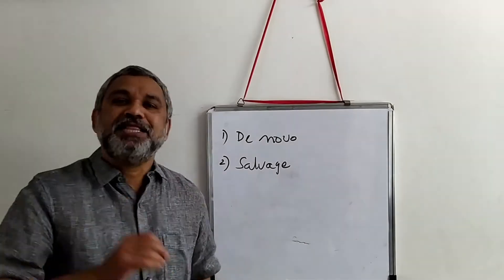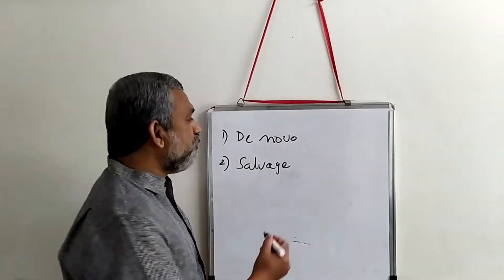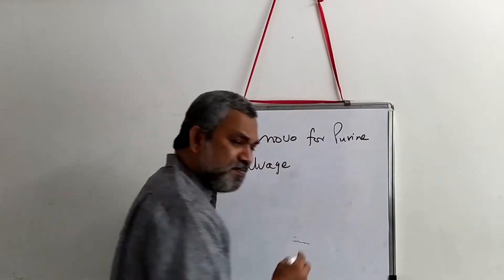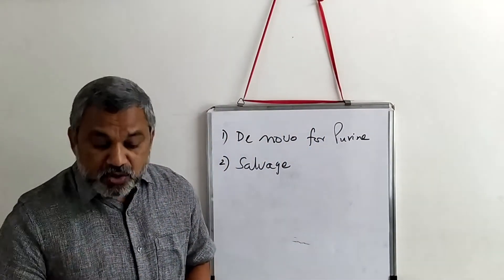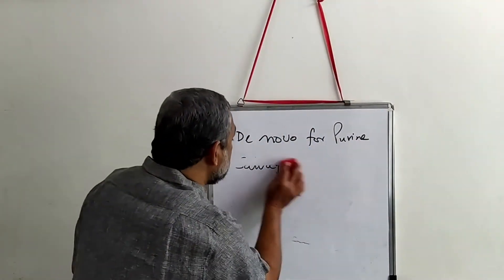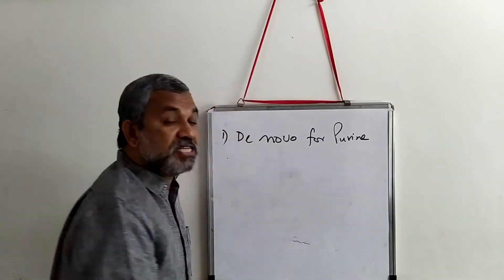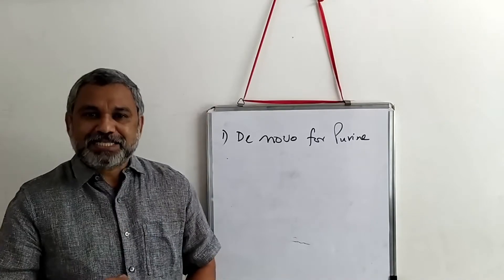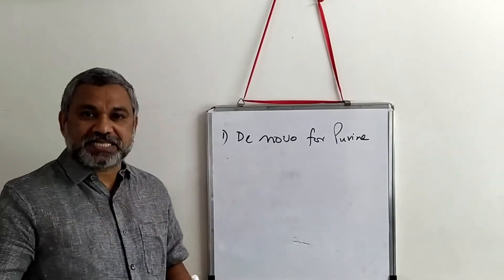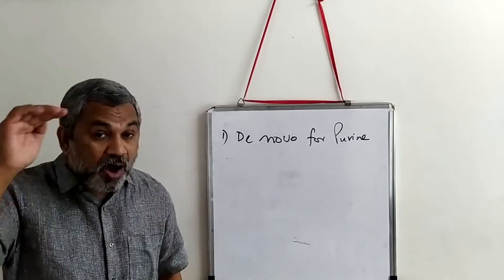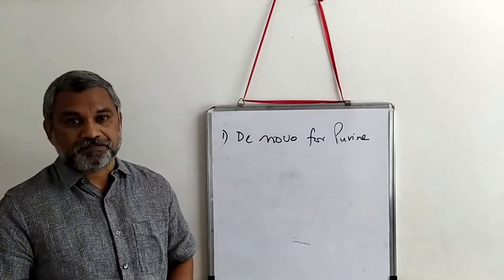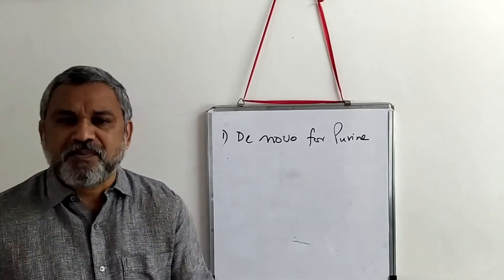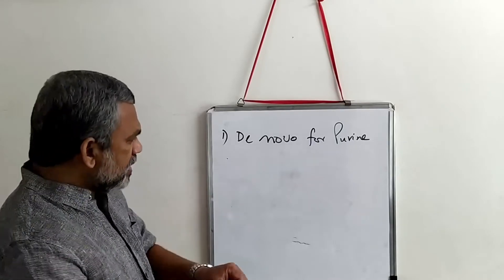Let us begin to understand the de novo pathway for purine synthesis. It is a long pathway involving about 10 different steps. We will understand each of these steps and how the purine rings are formed.